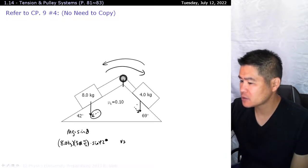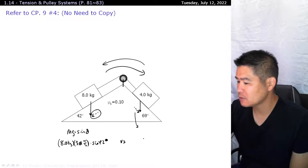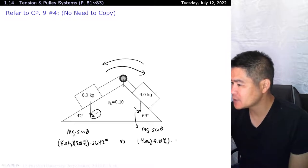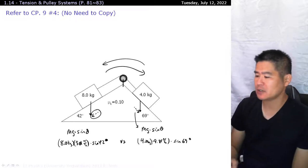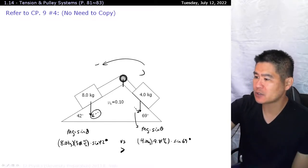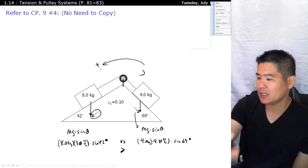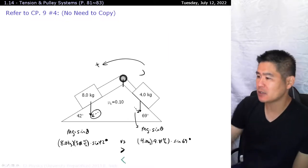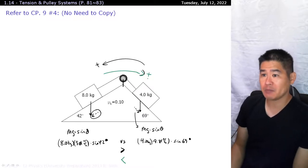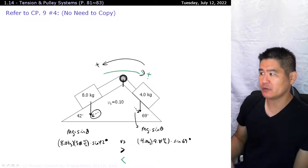So we're looking at the component of it, which is also mg times sine theta. So this one is 4.0 kilograms times 9.81 newtons per kilogram times the sine of 69 degrees. So you're going to do a comparison between the two. If the one on the left is greater, then you know that the system is going to accelerate towards the left. If the right hand side is greater, then the system will accelerate towards the right.